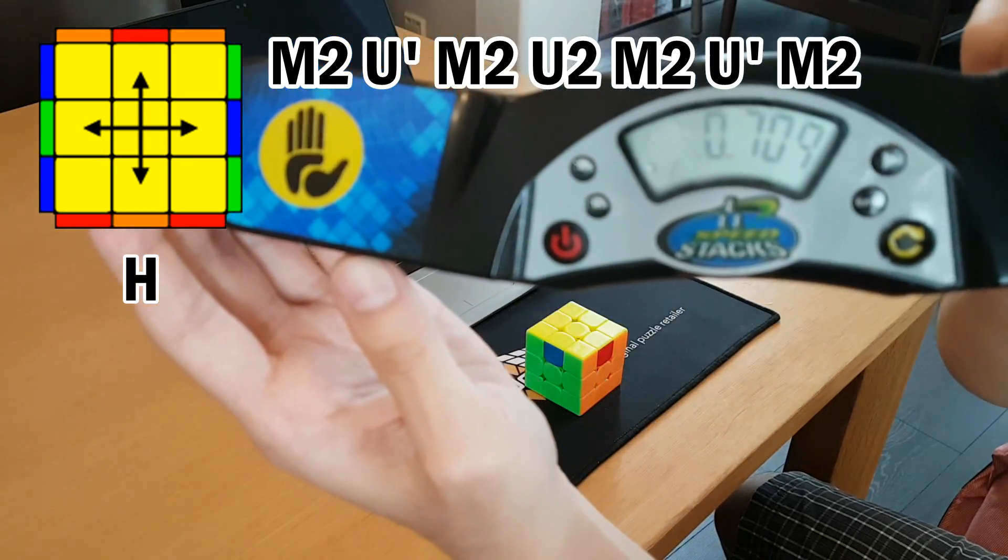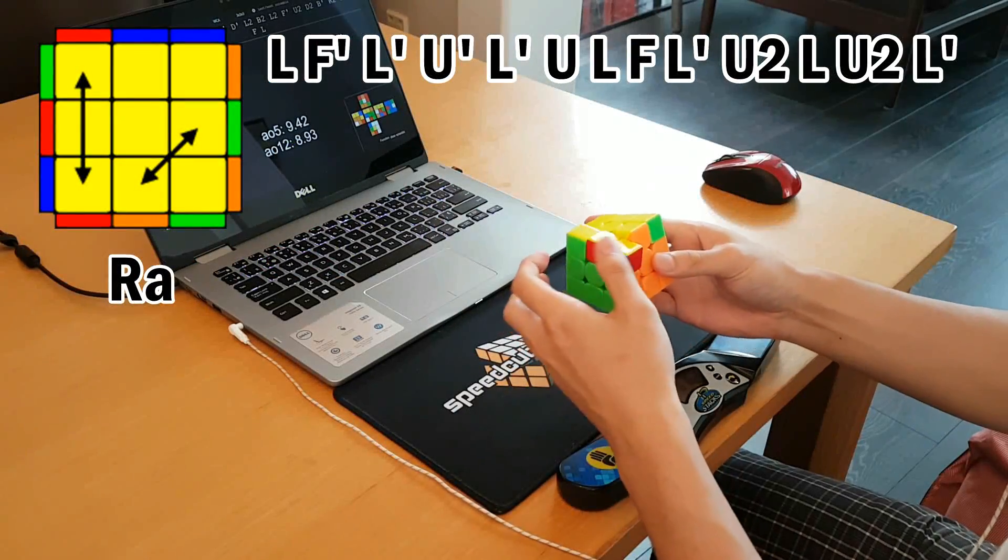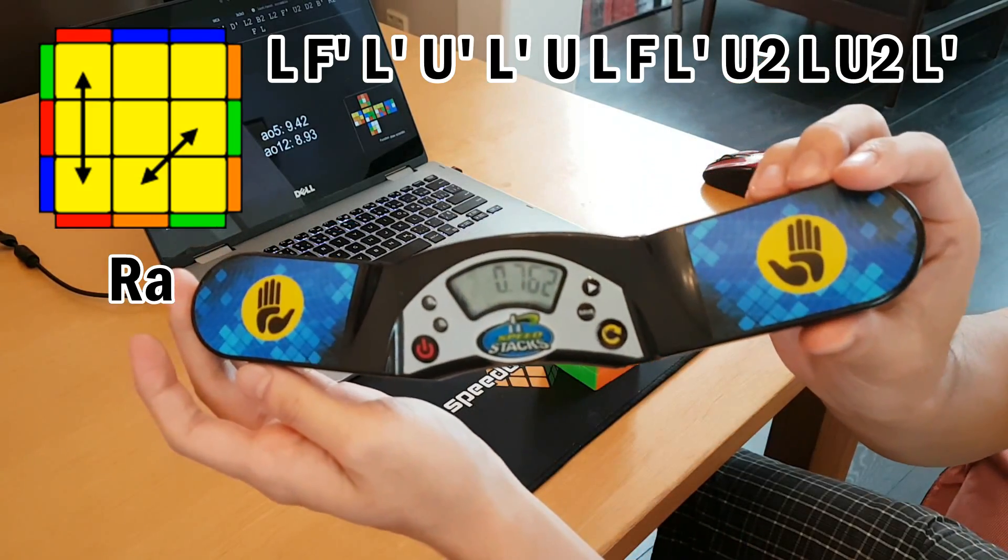So I set up a super easy scramble with a PLL skip, and I knew every single move I was going to do right from the start.